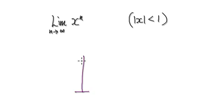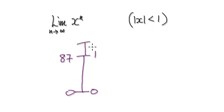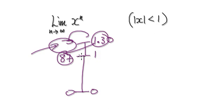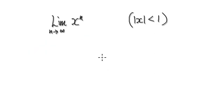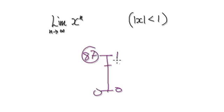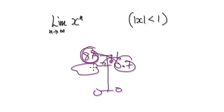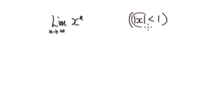If I were to give you, say, 87, and there's a 30% increase, you would multiply by 1.3 and the result gets bigger. But if there's a 30% decrease, you would multiply by 0.7 and you get a smaller result. So in the case of x where the absolute value of x is less than 1, multiplying repeatedly makes the value decrease.